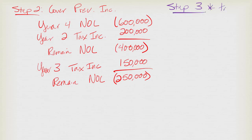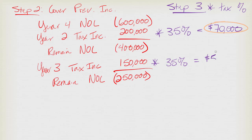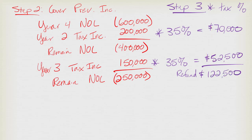Step three is to multiply by the tax rates. We shielded $200,000 of income, and the tax rate back in year two was 35%, so we can get $70,000 back from the government as a tax refund. Year three also had a 35% tax rate, so we can also get back another $52,500. This gives us a total refund of $122,500.